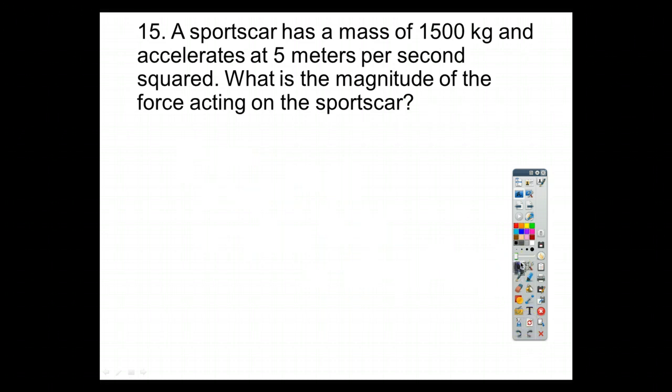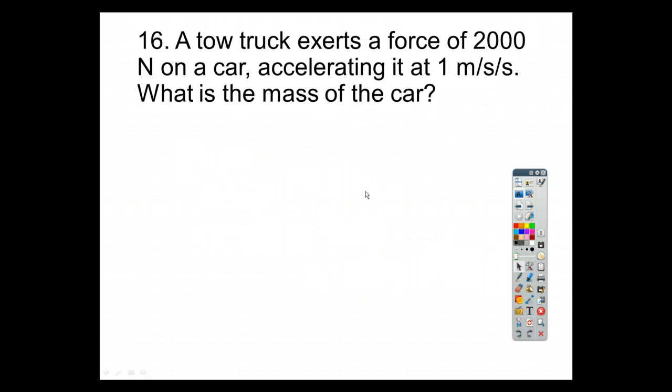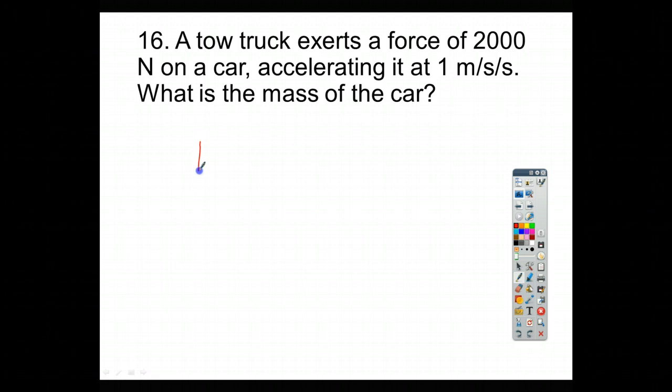For number 16, it says a tow truck exerts a force of 2,000 newtons on a car, accelerating it at 1 m per second per second. So, let's use our equation again. We know f is equal to m times a. The force is 2,000 newtons. We know we're looking for the mass, and it's accelerating at 1 m per second squared. If we divide everything by 1, we'll see that the mass here will be equal to 2,000 kg.